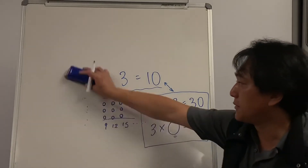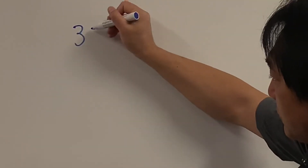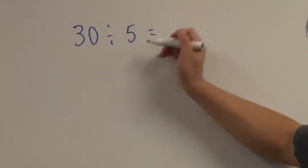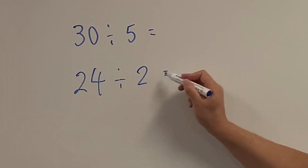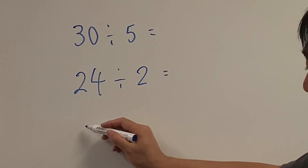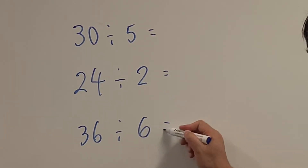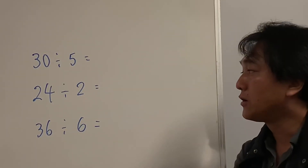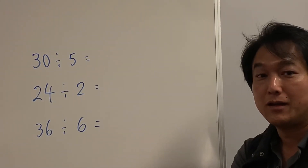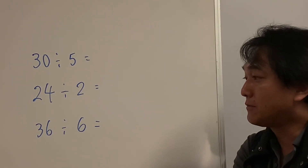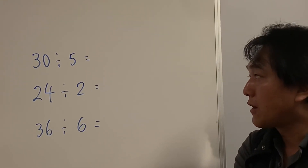So last questions. I'm going to give you: 30 divided by 5, 24 divided by 2, and 36 divided by 6. You can draw a picture, you can think of the multiplication that helps you, or you can simply write the answer. Let's pause the video.